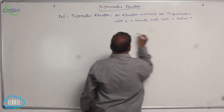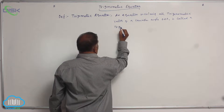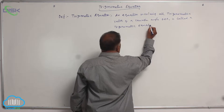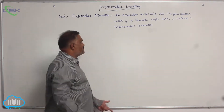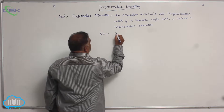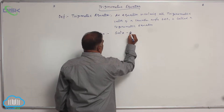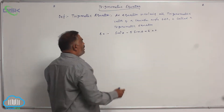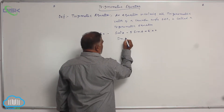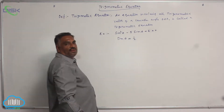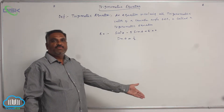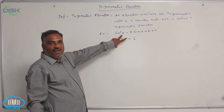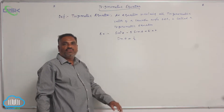This is called a trigonometric equation. For example, sine squared theta minus 5 sine theta plus 6 equals 0, or sine theta equals 1/2. You can write as many examples as possible. The set of values of theta satisfying the given equation is called a solution.